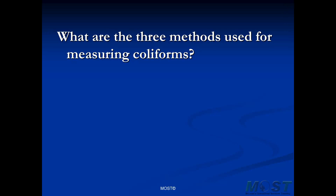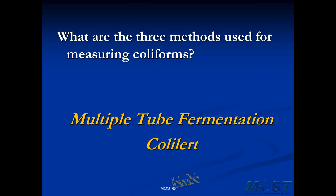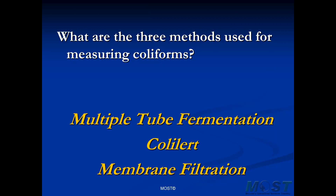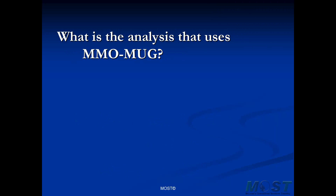What are the three methods used for measuring coliforms? There are three approved methods — you can use whichever one makes the most sense for your organization. Those methods are the multiple tube fermentation test, the Colilert test, and the membrane filtration test. Which of these three uses MMO-MUG? That's the special ingredient in the Colilert test — it's what causes the Colilert sample vial to turn yellow in the presence of total coliform bacteria.